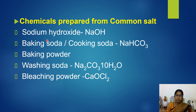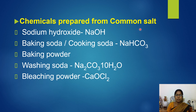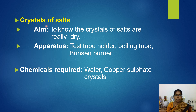Till here you have learnt about the chemicals prepared from common salt. Let's recap: sodium hydroxide (NaOH), baking soda or cooking soda (NaHCO3), baking powder, washing soda (Na2CO3·10H2O), and bleaching powder (CaOCl2). These are the compounds prepared from common salt. Some of them are salts that appear as crystals, so the next topic is about crystals of salts.